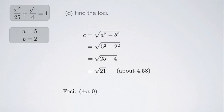The foci are given by (±c, 0). If the y² term had the larger denominator, the foci would instead be (0, ±c). But in this case the foci are (±√21, 0).